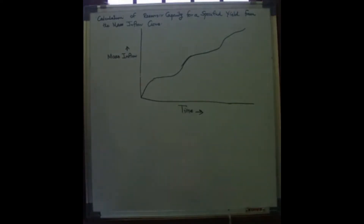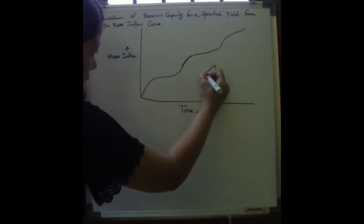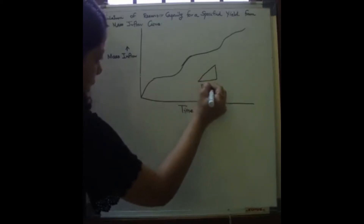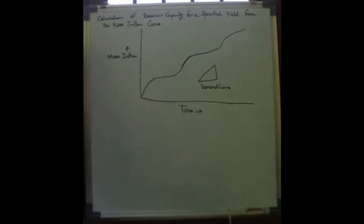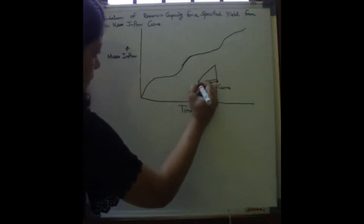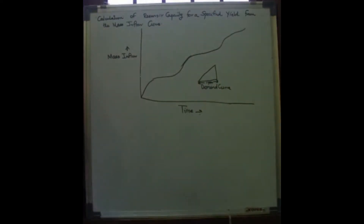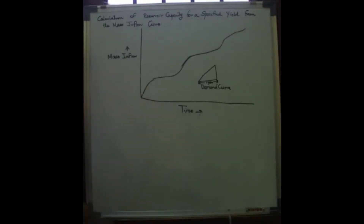Step-by-step procedure: the first step is to prepare the mass inflow curve from the flood hydrograph of inflow for several years. Also prepare the mass curve of demand on the same scale.